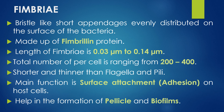Fimbriae are bristle-like short appendages evenly distributed all over the surface of the bacteria. They are made up of a protein called fimbrillin. The length of fimbriae is 0.03 to 0.14 micrometers, and the total number of fimbriae per cell ranges from 200 to 400. Fimbriae are shorter and thinner than flagella and pili. Their main function is surface attachment to host cells, making them important in bacterial pathogenesis. Fimbriae also help in the formation of pellicles and biofilms.